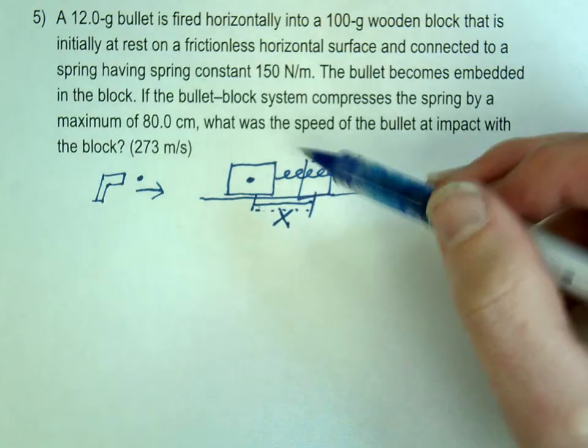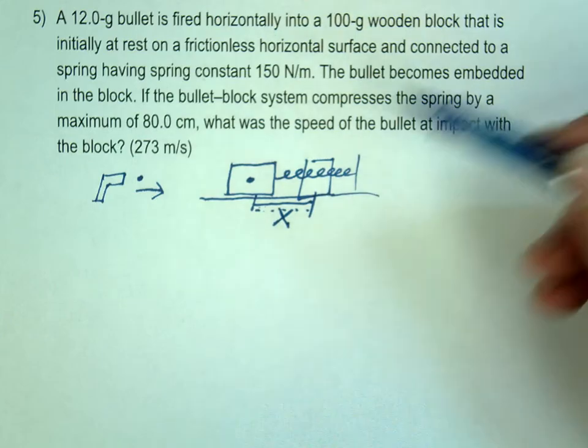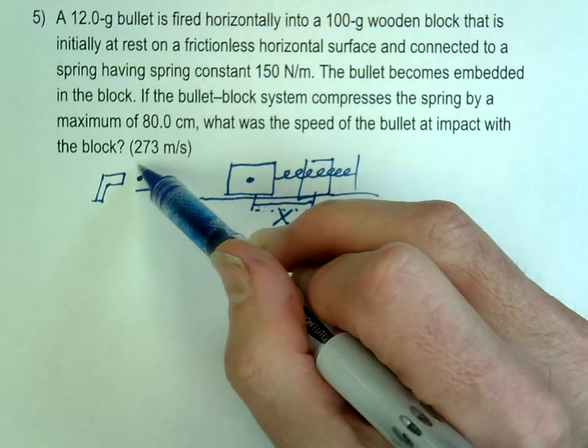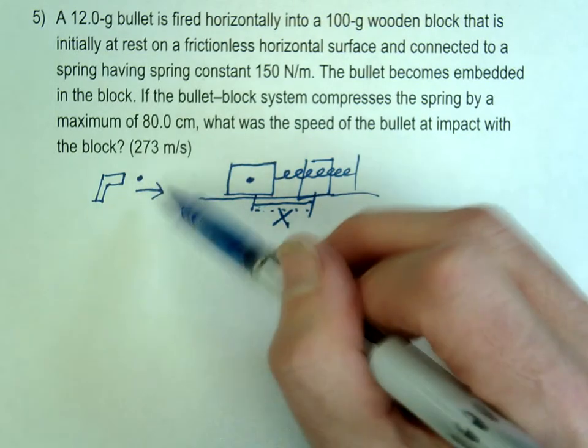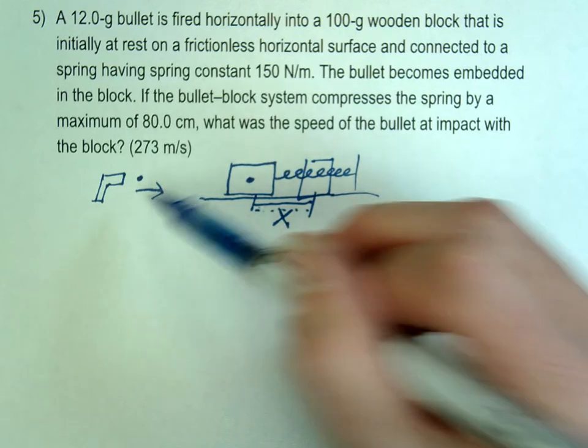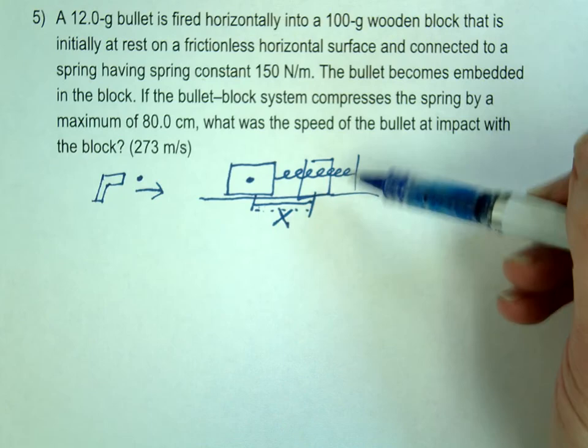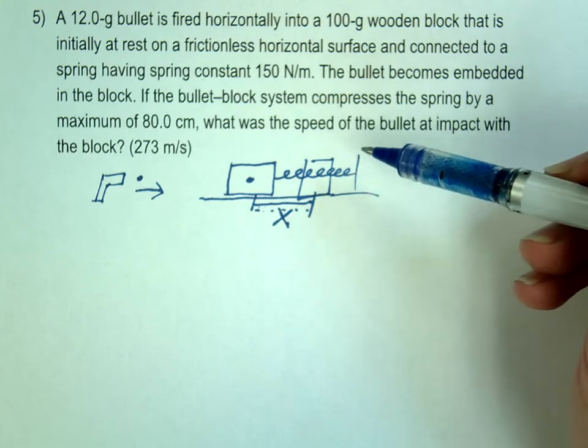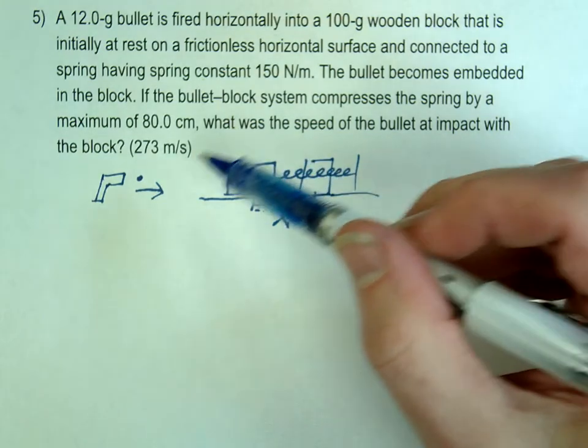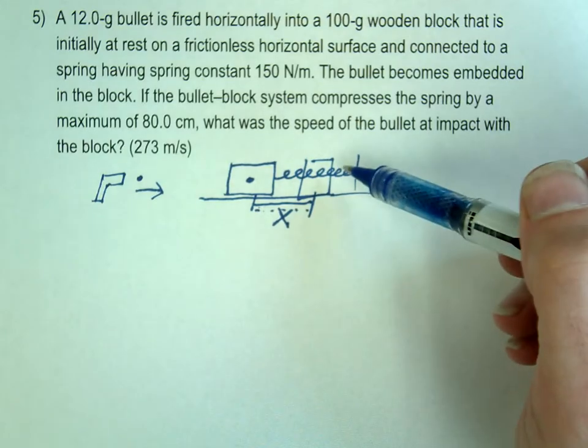So the common mistake people make, and maybe some of you just made this, is well what kind of energy does the bullet have right here? Kinetic energy. And then when it compresses, what kind of energy does it have back here? Spring potential.